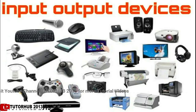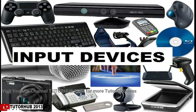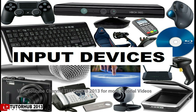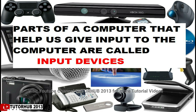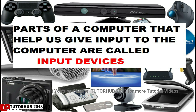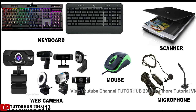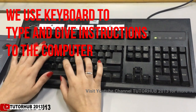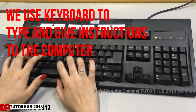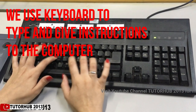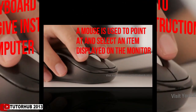We can tell the computer what to do with the help of a keyboard and a mouse. The parts that allow us to give input to the computer are called input devices. A few examples of input devices are keyboard, mouse, scanner, microphone, and web camera. A keyboard has many buttons on it called keys — we use the keyboard to type and give instructions to the computer.